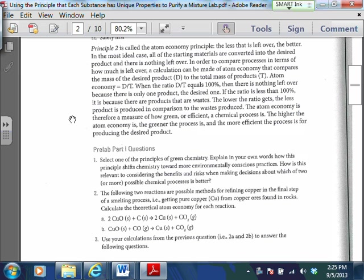It says principle two is called the atom economy principle. So it basically goes through here, this little equation. And it's D over T. D is the desired product, T is the total mass of the products. And this is just a way to see how much other stuff are we making that we don't necessarily care about. You want to get that ratio as close to 100% as you can because the other products that we're making then become waste products.